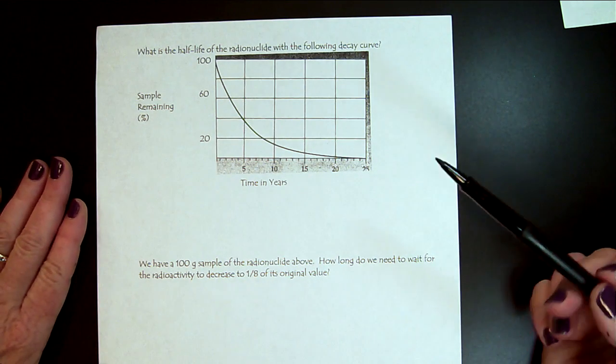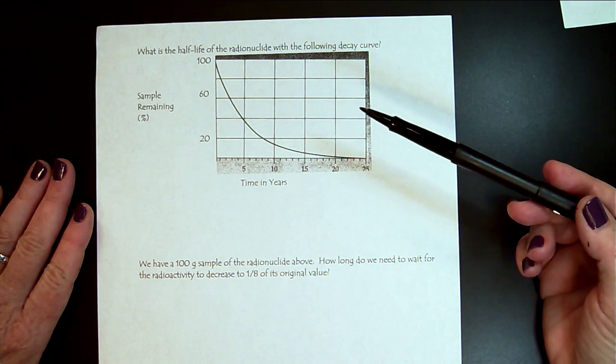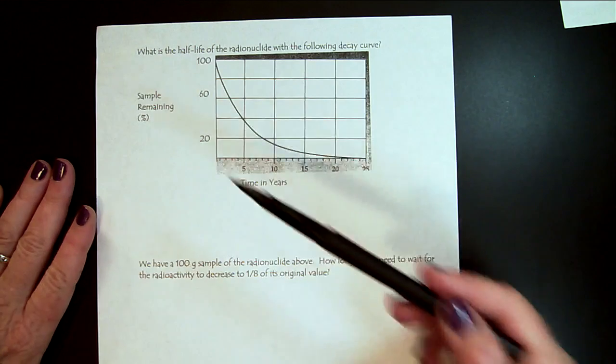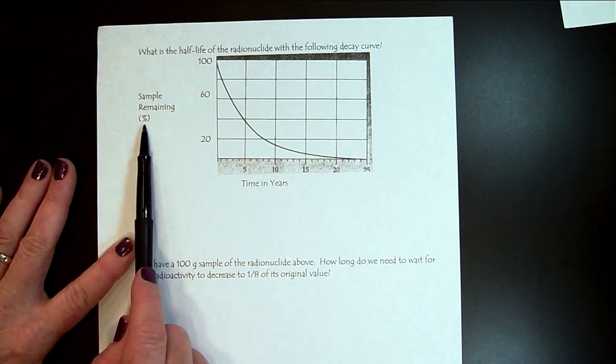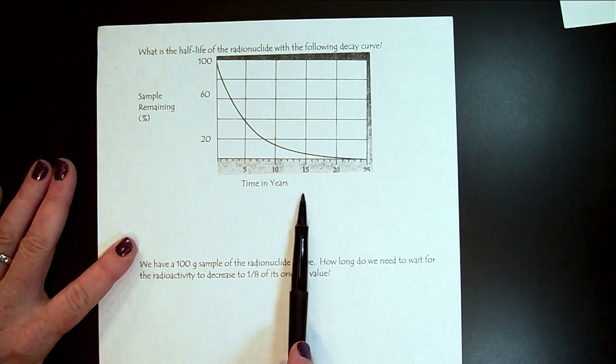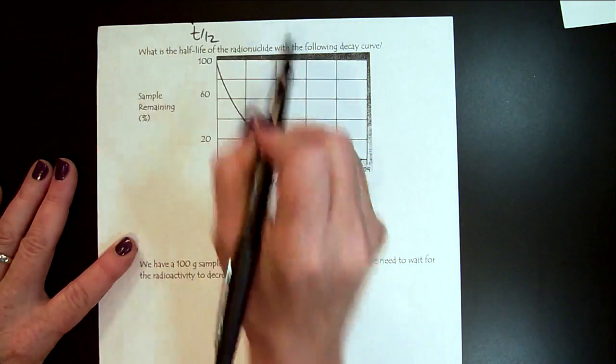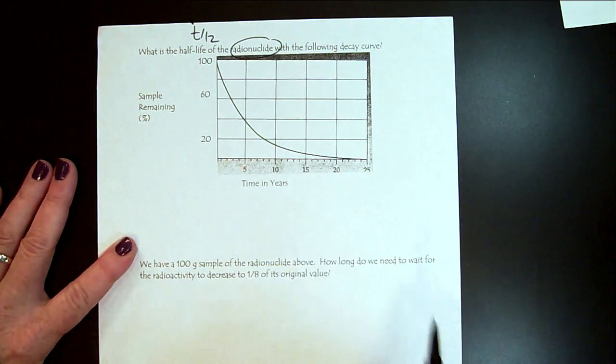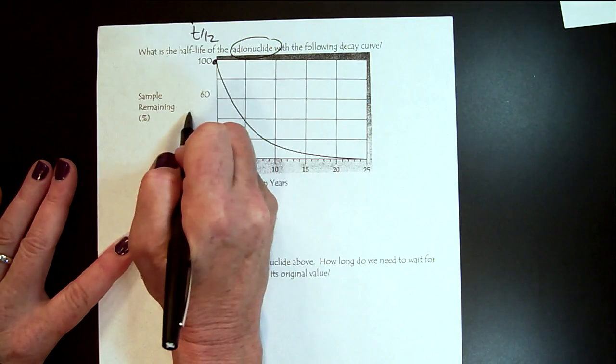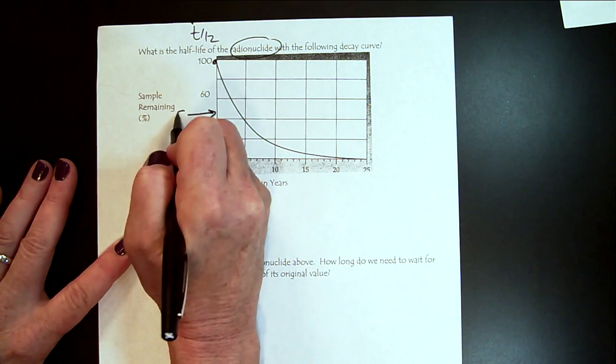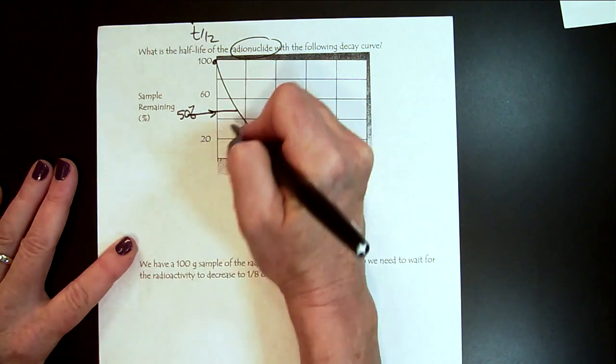So this is a different way. So before I asked you a question about half-lives using a table, here is a graph. So the y-axis, sample remaining, time in years. What is the half-life of this radionuclide? So we started at 100, so we're going to want to go to 50 percent. And we read that there, and we come down.